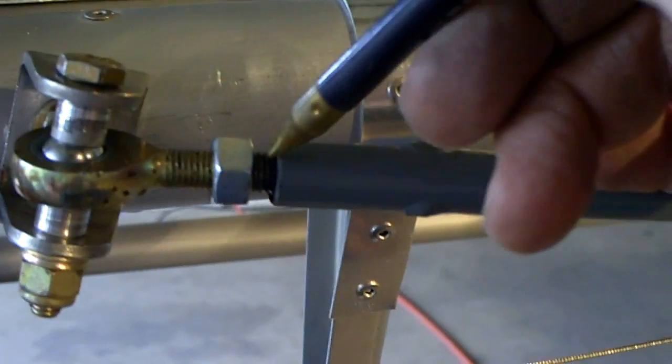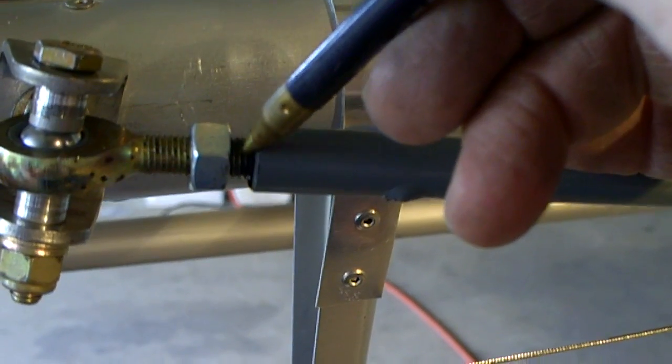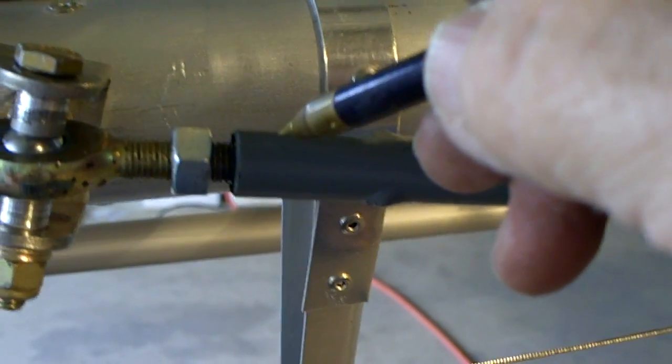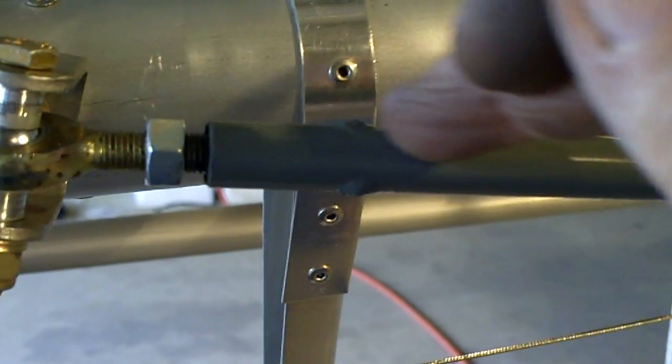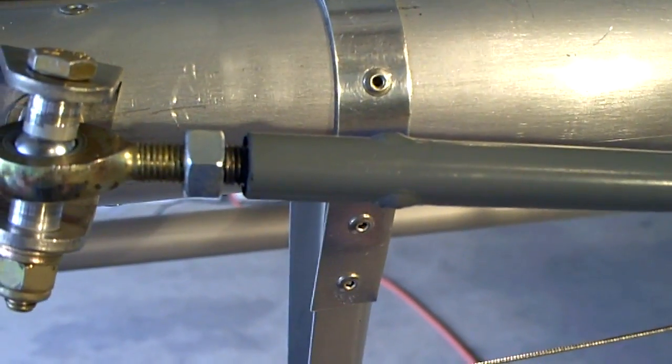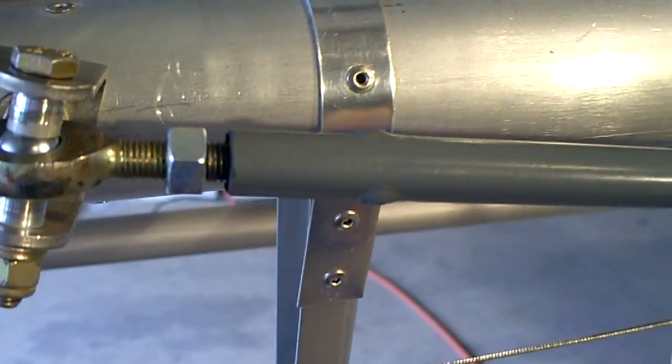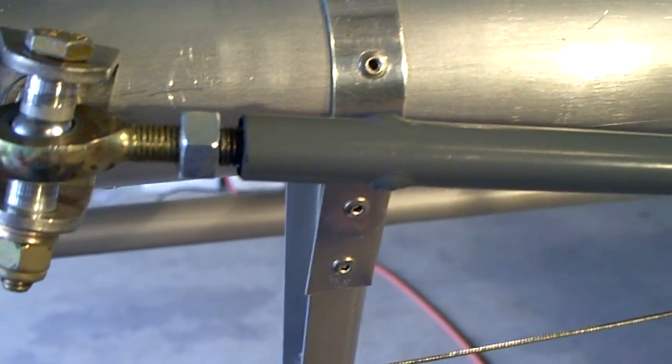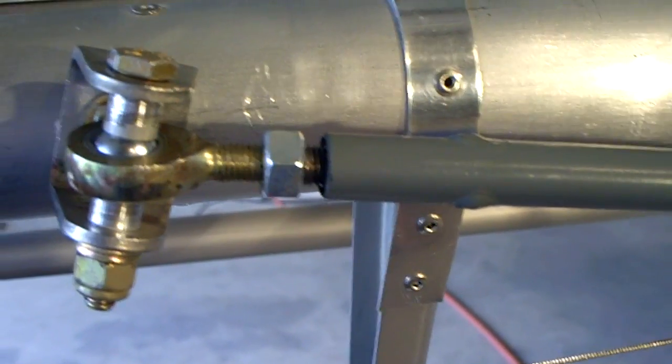You might want to consider putting some anti-seize compound on these threads, because when they weld these inserts into these arms, they do get rusty. So go ahead and put a little bit of anti-seize compound on there, so later on, if you try to take that off, it will come off.